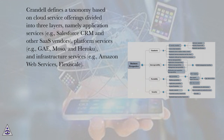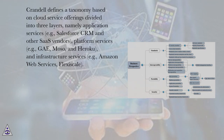Crandall defines a taxonomy based on cloud service offerings divided into three layers: namely application services, for example Salesforce CRM and other SaaS vendors; platform services, for example GAE, MOSO, and Heroku;